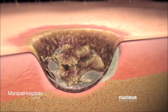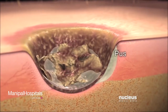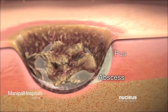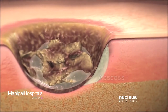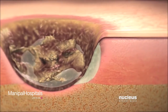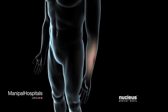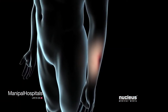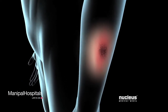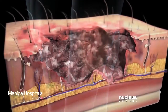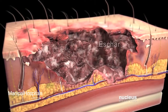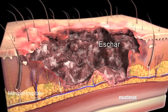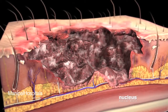The infection may develop into a pocket of pus, called an abscess, that impedes wound healing. A wound resulting from a burn may form a hardened crust of dead tissue, called an eschar, that can prevent healthy tissue growth and healing.